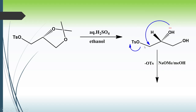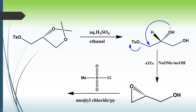In the next step, sodium methoxide acts as a base and abstracts the proton; there is removal of OTs⁻ and we get an epoxide. After the formation of this epoxide, we use mesyl chloride in the presence of pyridine — pyridine abstracts the hydrogen, the O⁻ attacks the sulfur atom, chloride leaves, and we get OMs, so the epoxide OH is replaced by OMs.